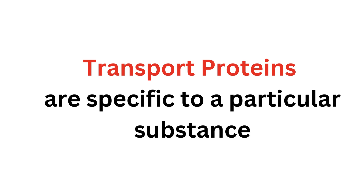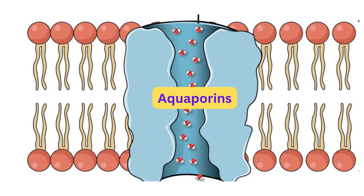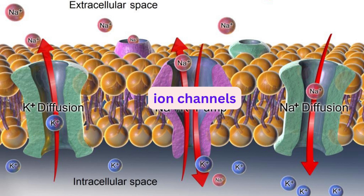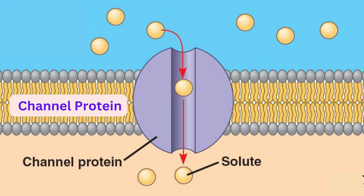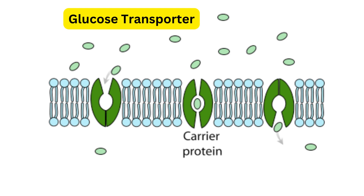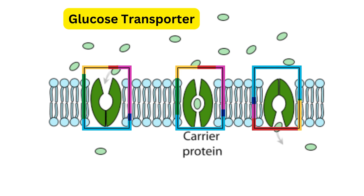Transport proteins that assist in either passive or active transport are highly specific, each allowing only a particular substance or small group of similar substances to pass through. Aquaporins move water, ion channels move ions, and so forth. Some of these are channel proteins that remain open, and some are carrier proteins which alternate between two conformations, like the glucose transporter, where binding with glucose causes it to change shape, and then once glucose is released it changes back to its original conformation.